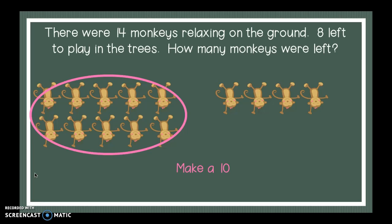And then I'll subtract from that 10 group. It said eight left to play in the trees. So I'm going to go ahead and subtract my eight. How many monkeys were left out of that 10 group? Yeah, that's right, two. I could say the number sentence, 10 minus eight equals two.